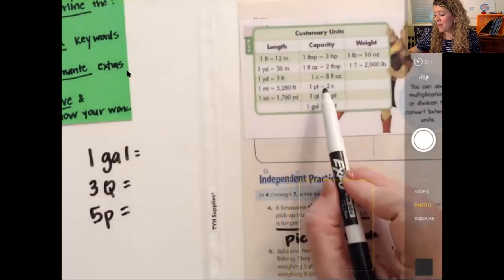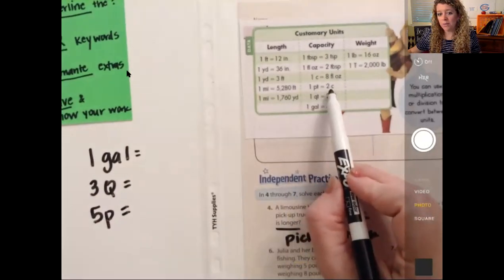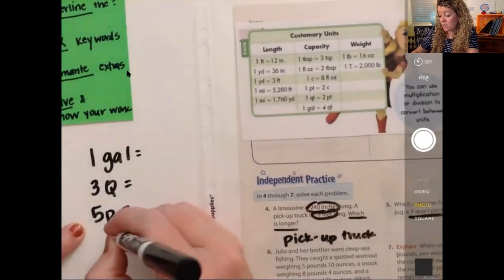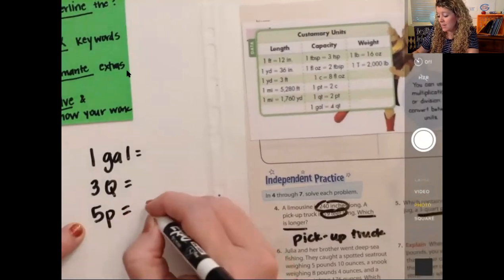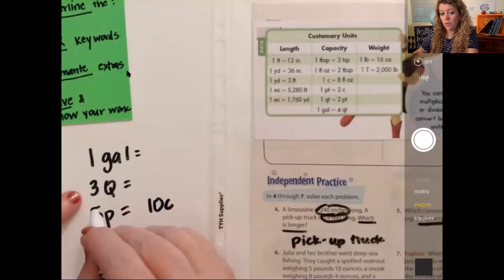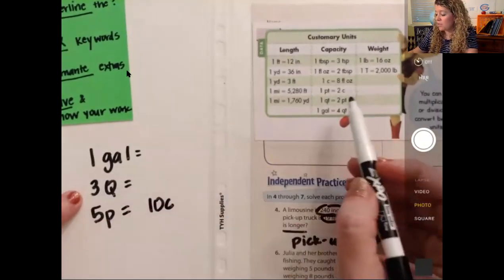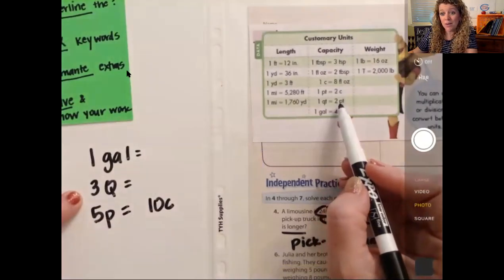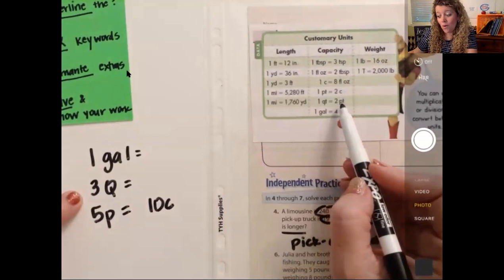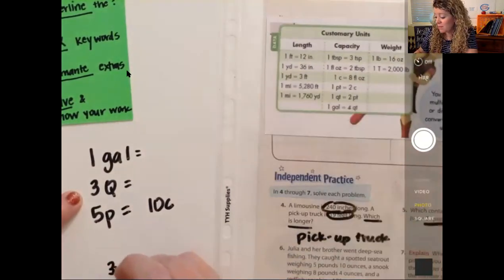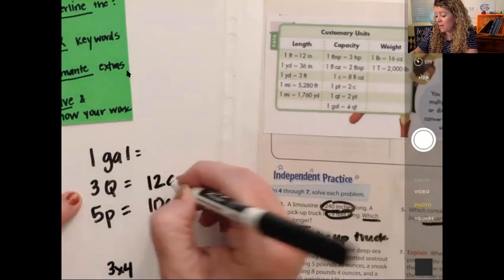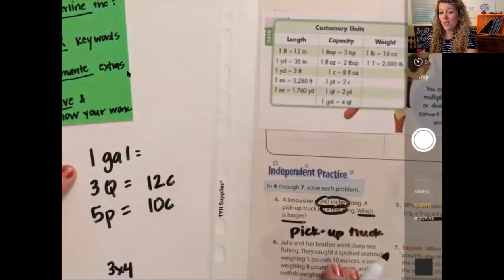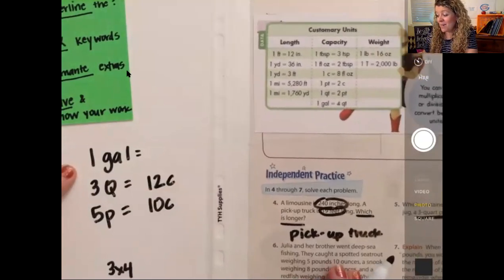And we know that in a pint, every pint has two cups right here. So five pints, let's start down here. Five pints times two cups is how many cups? Ten cups total. Three quarts, we need to figure out how many cups are in three quarts. Well, one quart equals two pints. One quart also equals how many cups? Four cups. So three times four cups is 12 cups. One gallon, we learned, do you remember that capacity video with my boys in there? We learned that in a gallon, there's how many cups? Do you remember?